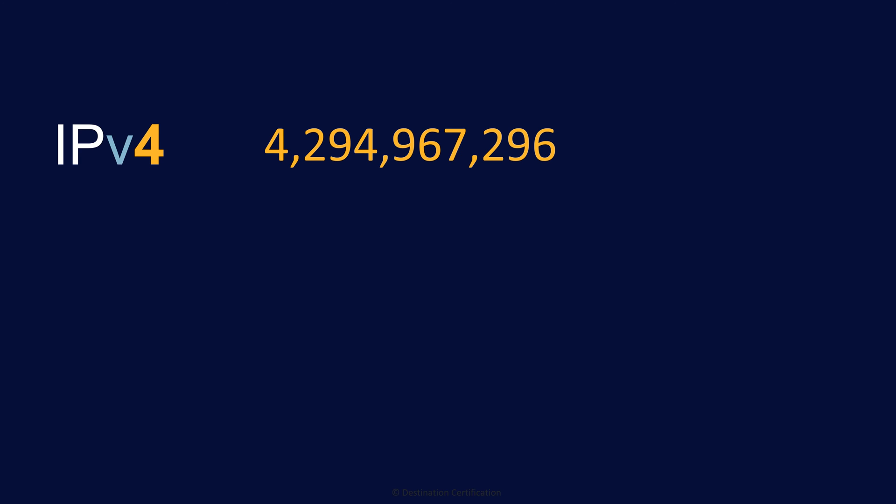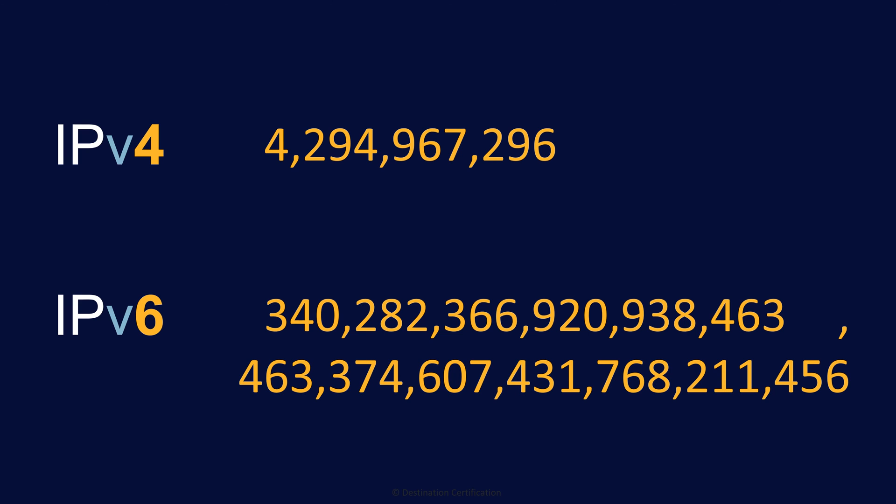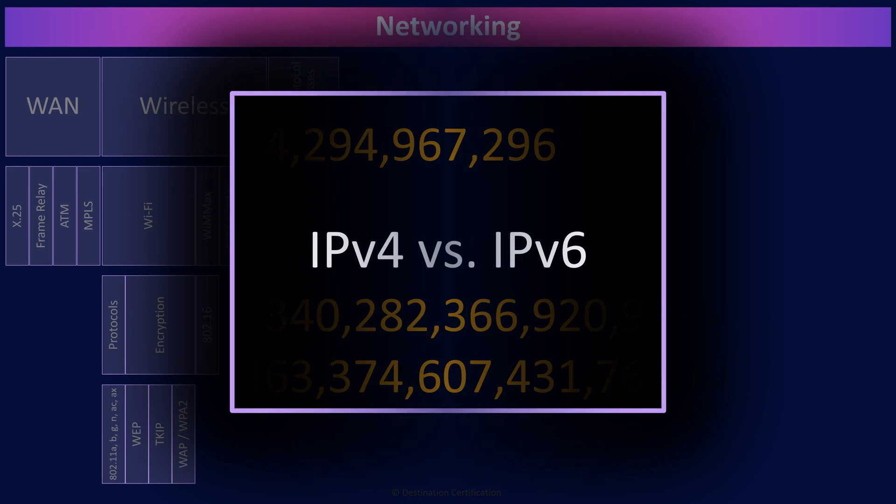IP version 4 also has no security built into it. IPv6 addresses both of those problems. The address space for IP version 6 is 2 to the power of 128, or 340 undecillion possible addresses — a very, very large number. We should be good for at least a couple more years once the internet manages to switch over to IP version 6. Another big advantage of IP version 6 is that capabilities for encryption and integrity checking are built right in, whereas with IP version 4 we had to duct tape these capabilities on later.